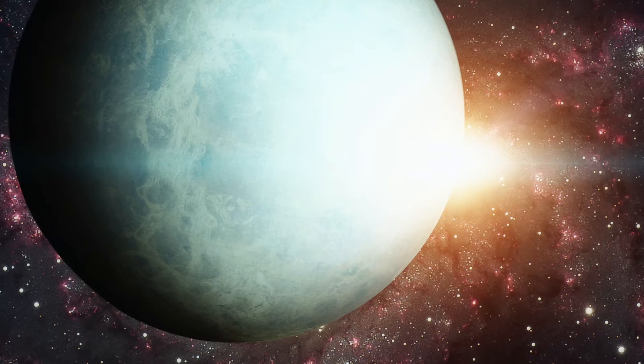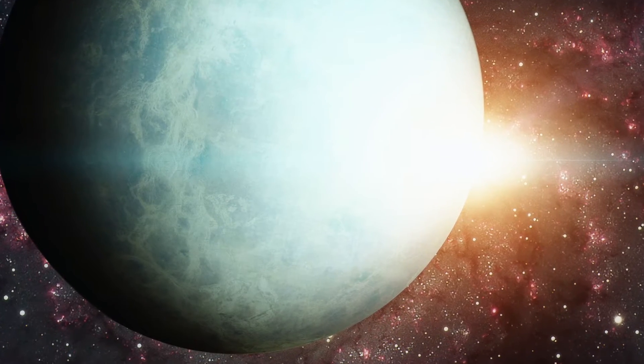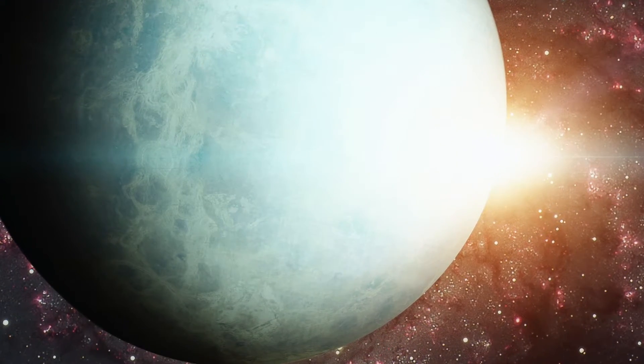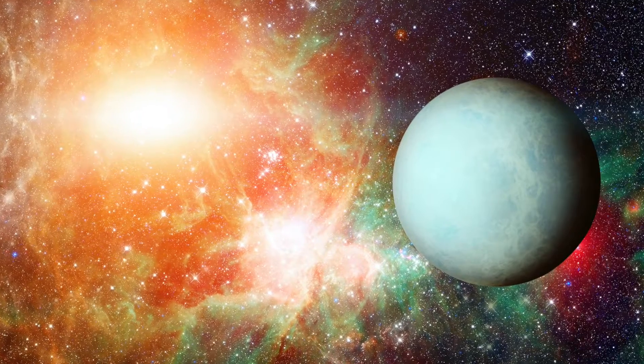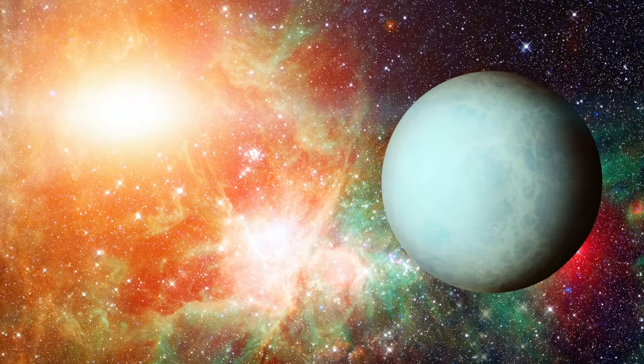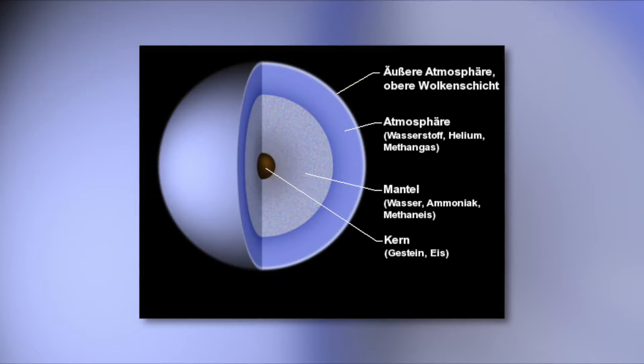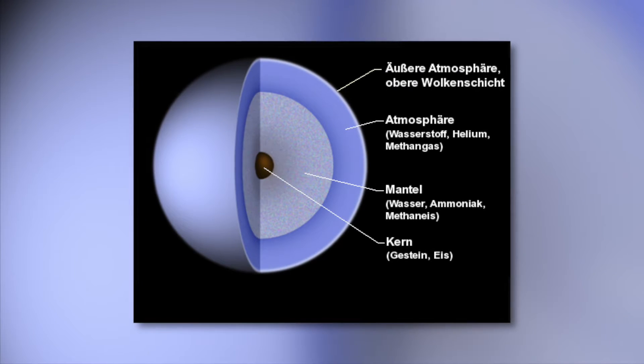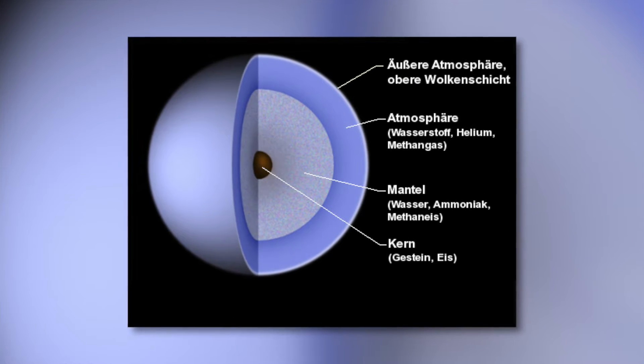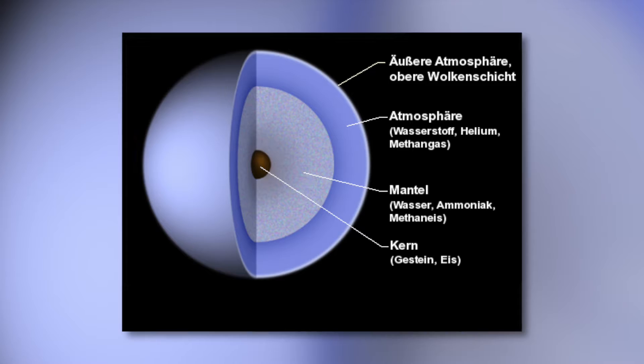As the red part of the sunlight is absorbed, the ice giant appears in a wonderful green-blue. About 80% of the mass of Uranus is held together in the liquid core. This core is largely composed of compounds such as methane, frozen water, ammonia, and other frozen elements.